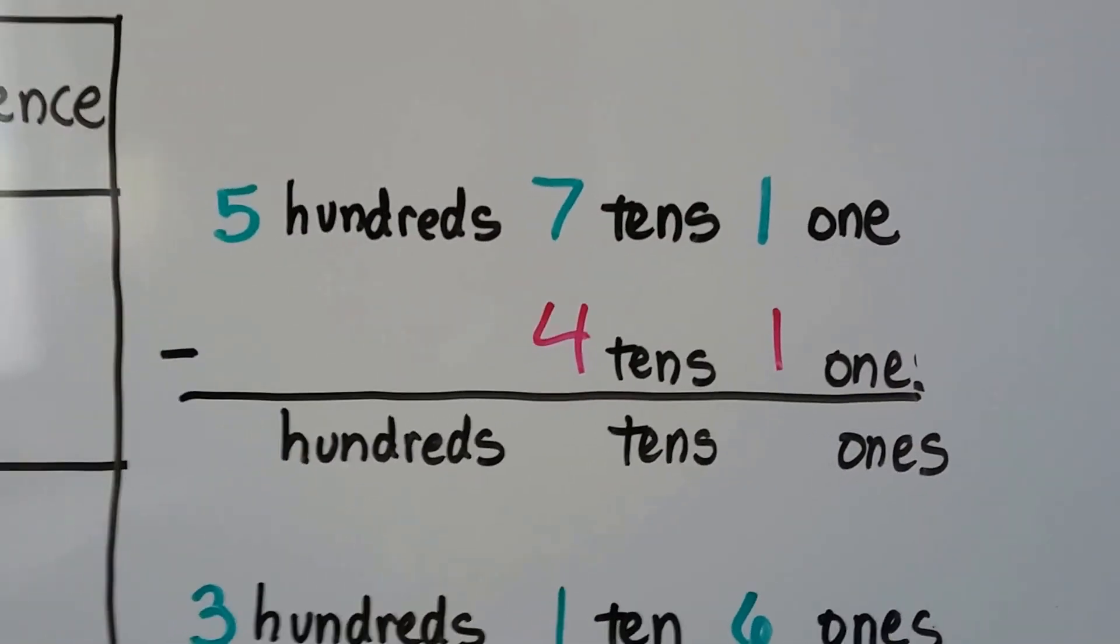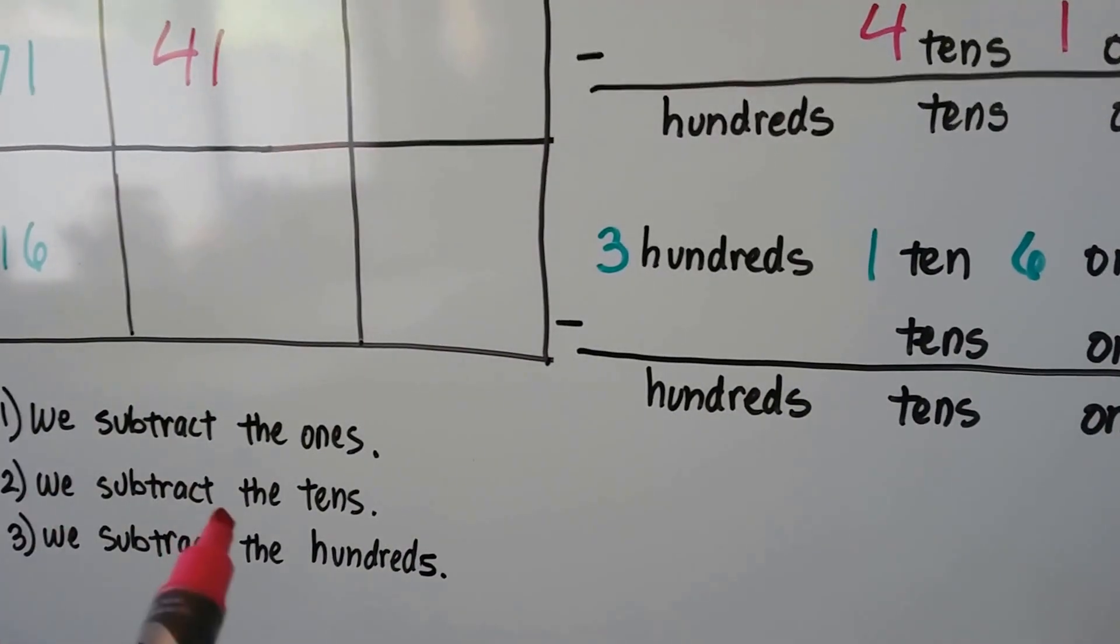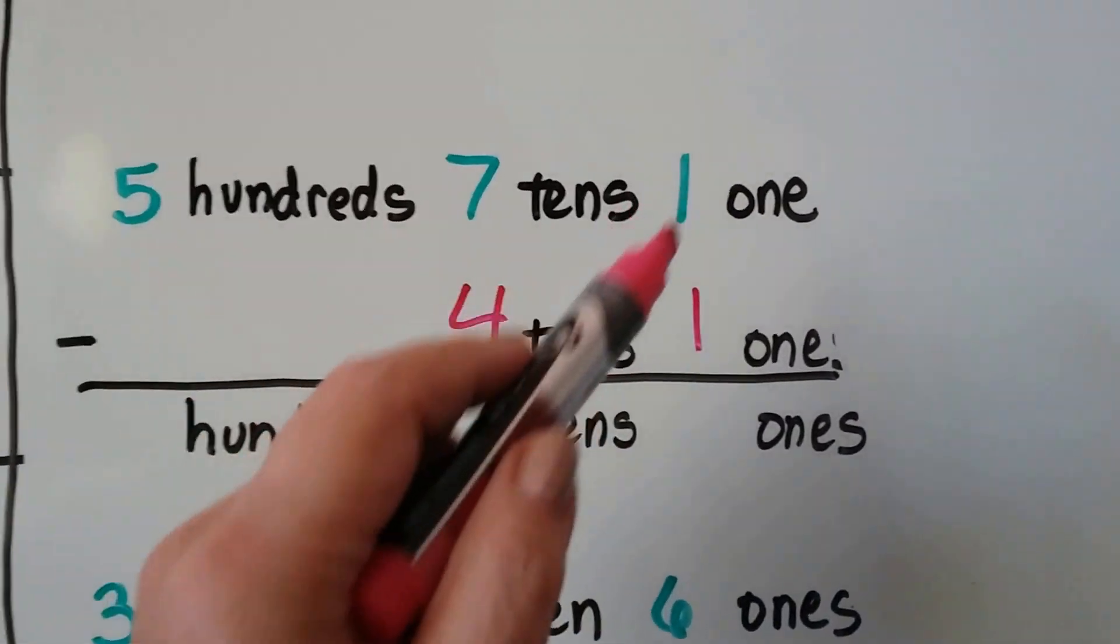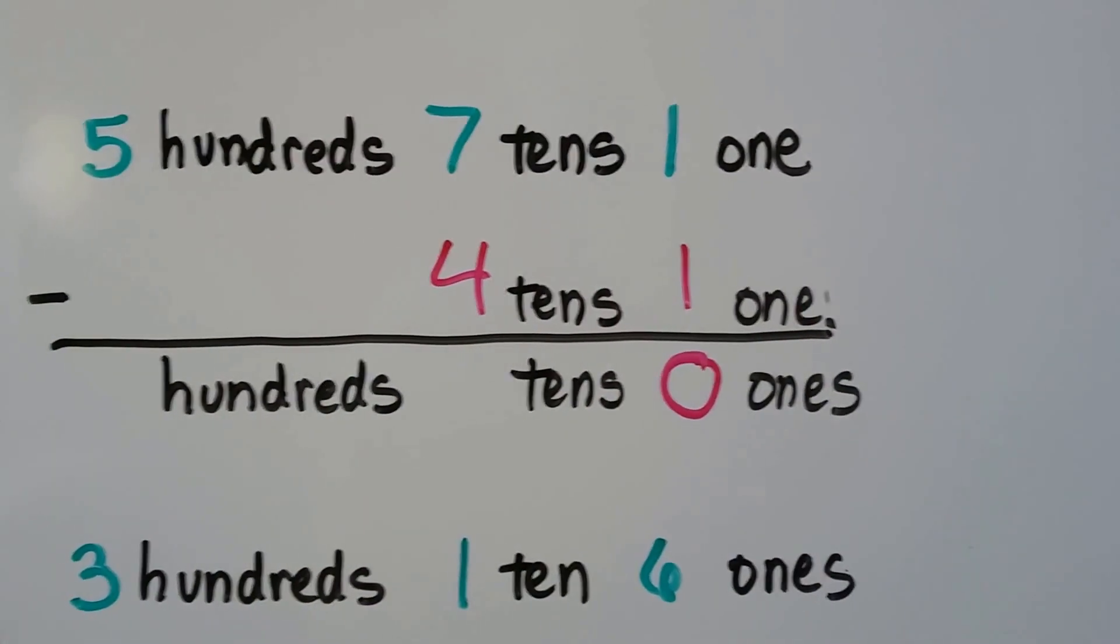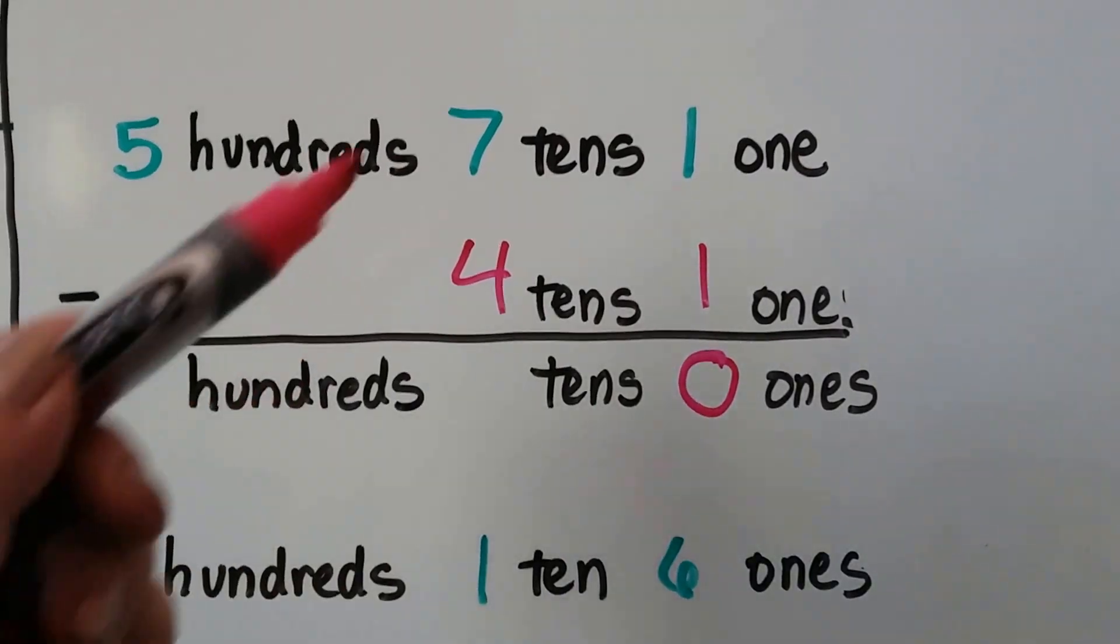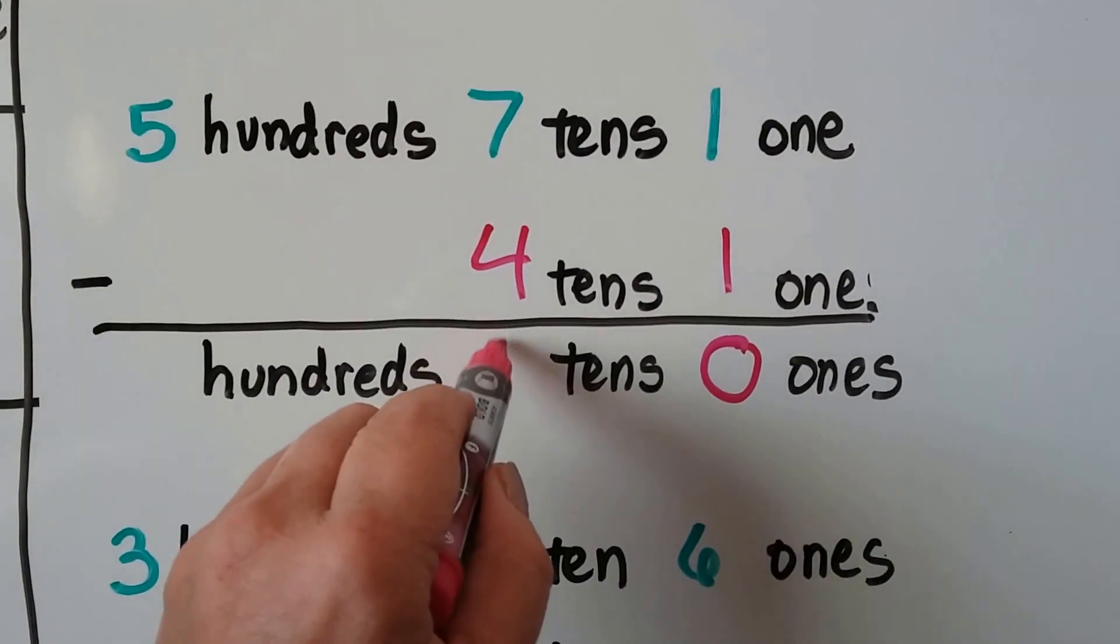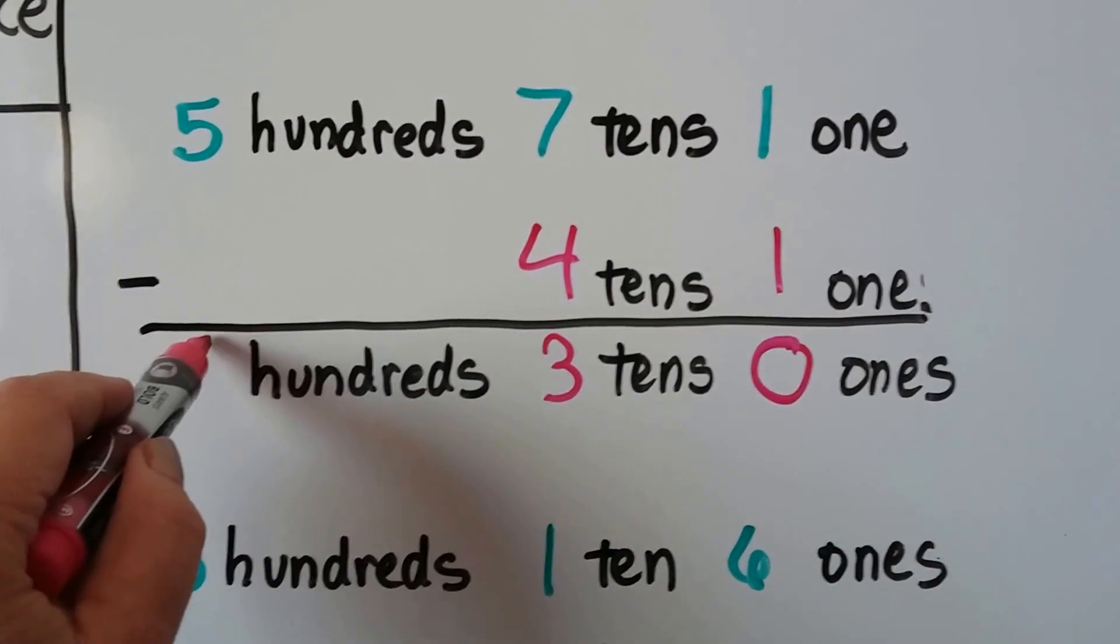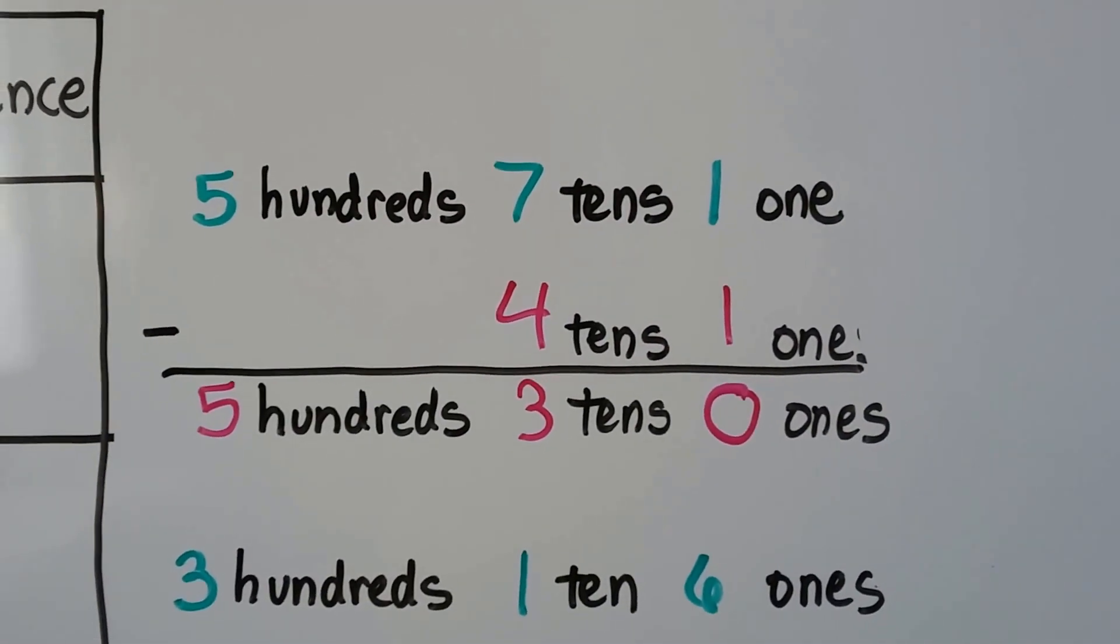The first thing we do is we subtract the ones. Then we subtract the tens, then we subtract the hundreds. We start on this side and then slowly move our way over. 1 take away 1 is 0, isn't it? So we have 0 ones. We have 7 tens take away 4 tens. Well, that's 3 tens. And because there isn't anything here, we just drop the 5 down. Our answer is 5 hundreds, 3 tens, and 0 ones.